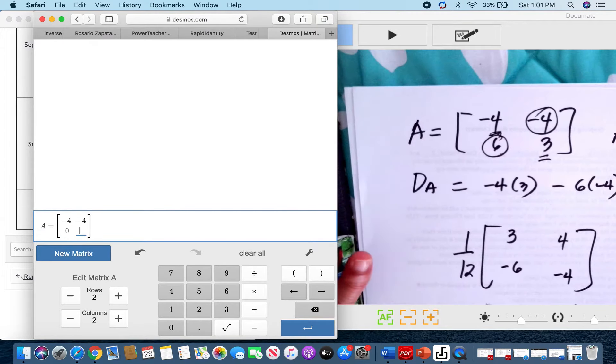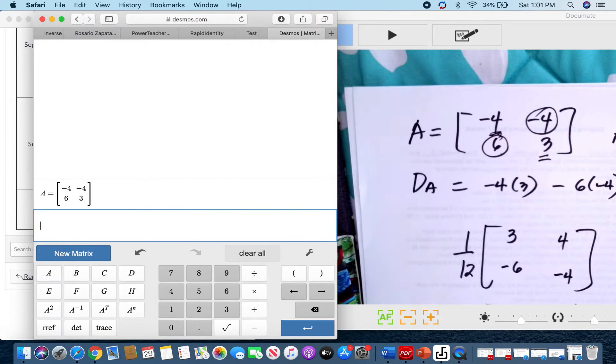And then positive 3, and then positive 6. Enter that, and it will be in the memory of the calculator. After that, since this is the symbol for inverse, we need to put first A.